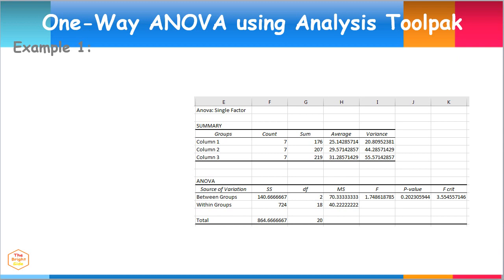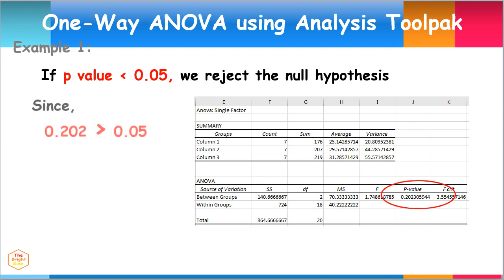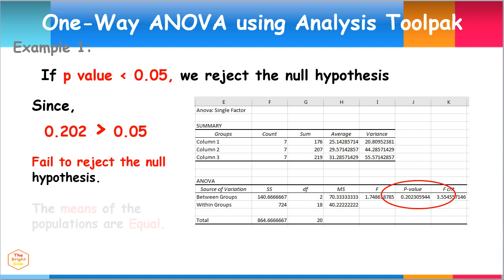Another method is determining whether the P-value is less than 0.05, which is the alpha value. If this is the case, then one must reject the null hypothesis. This is not the case, since 0.202 is greater than 0.05. Therefore, we fail to reject the null hypothesis. The means of the three populations are equal, and the difference between the means is not statistically significant.